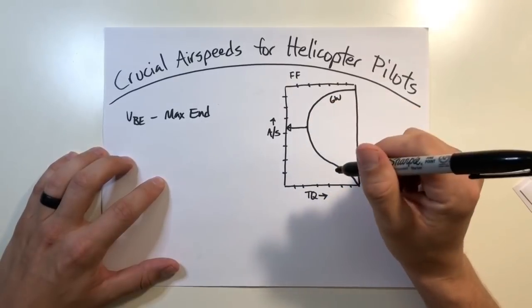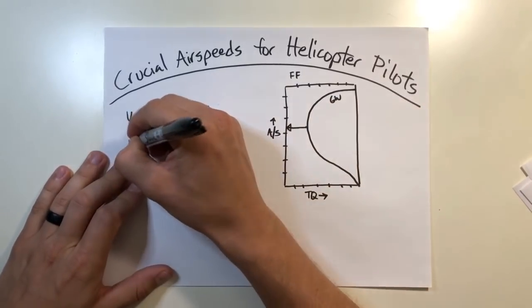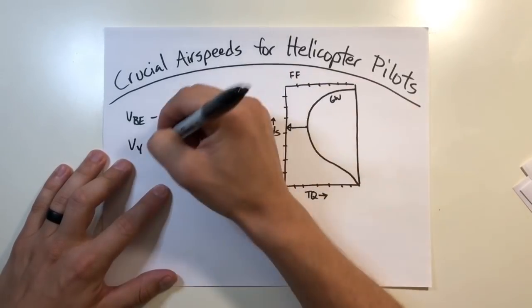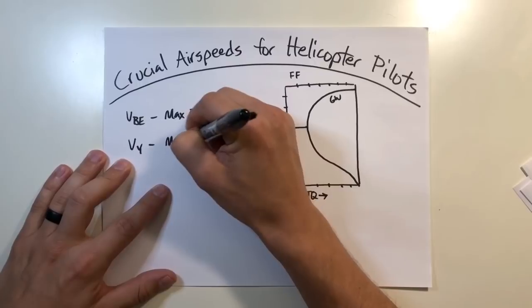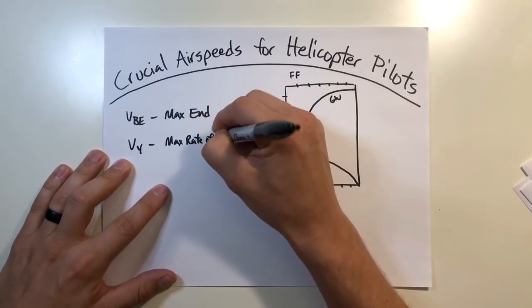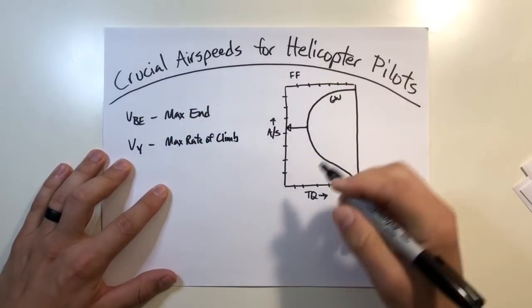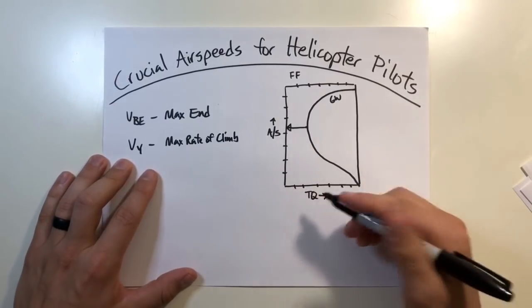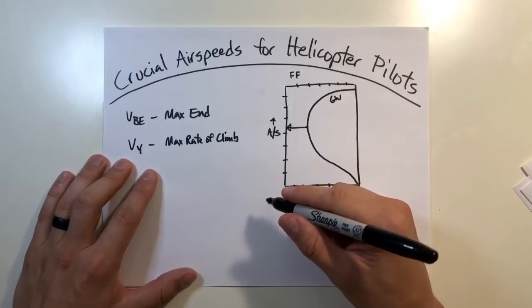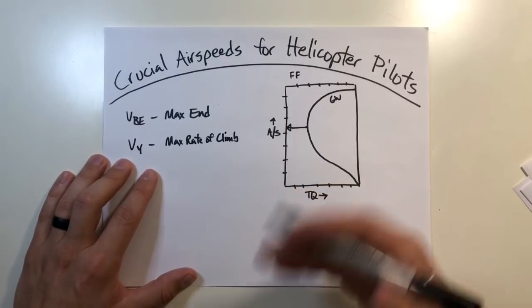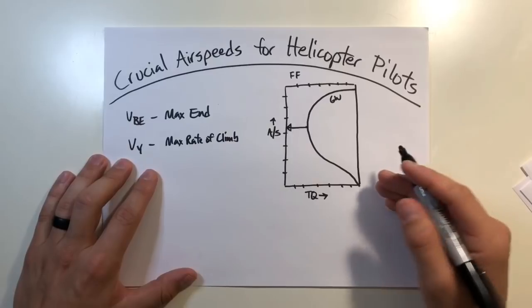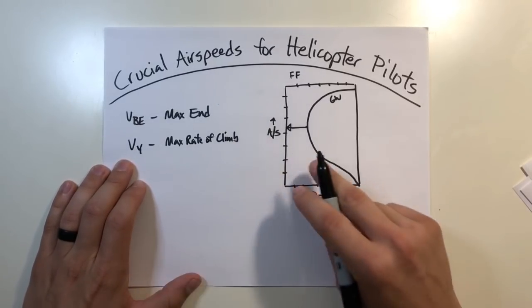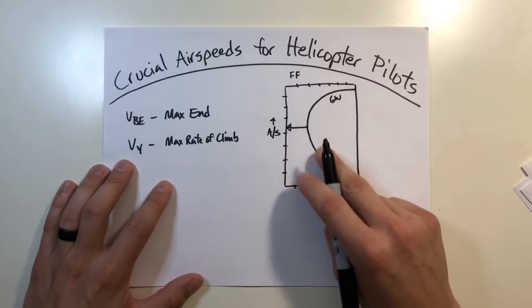It's the point at which the fuel flow is the least. It gives you the most time in the air. So this is going to be very close to our next airspeed, which is going to be VY. Now VY is going to give you your maximum rate of climb, your max rate of climb airspeed. This is the speed at which the aircraft climbs at the fastest rate per unit of time.